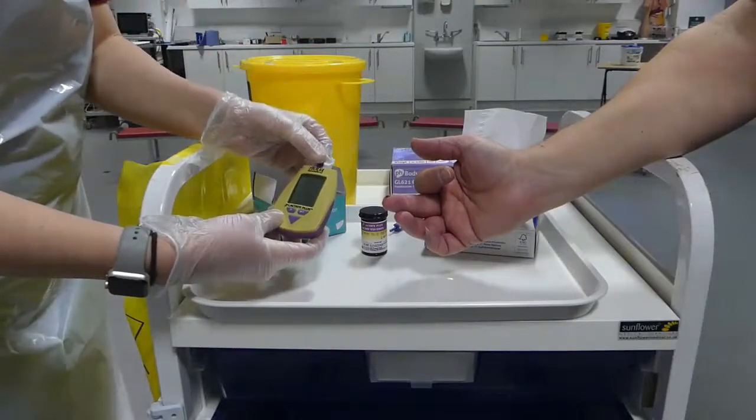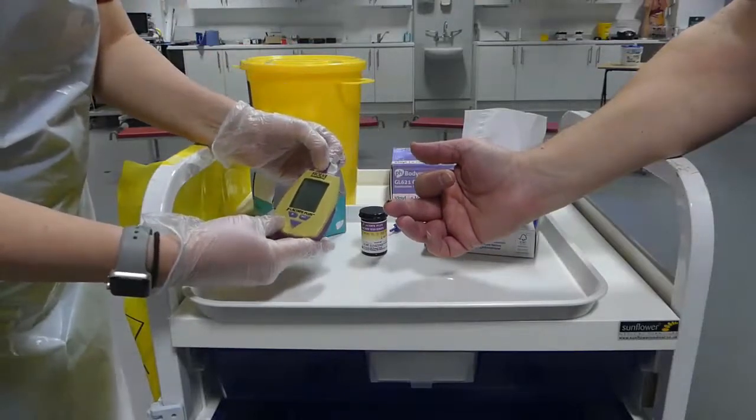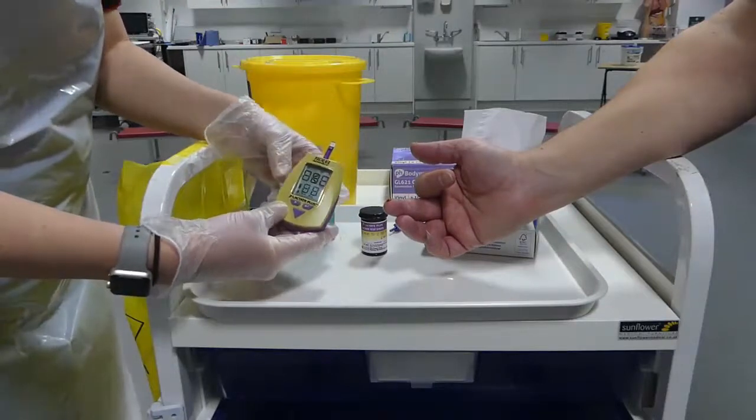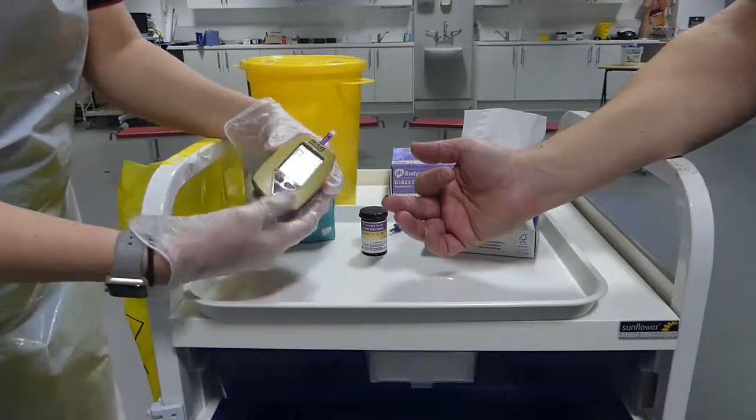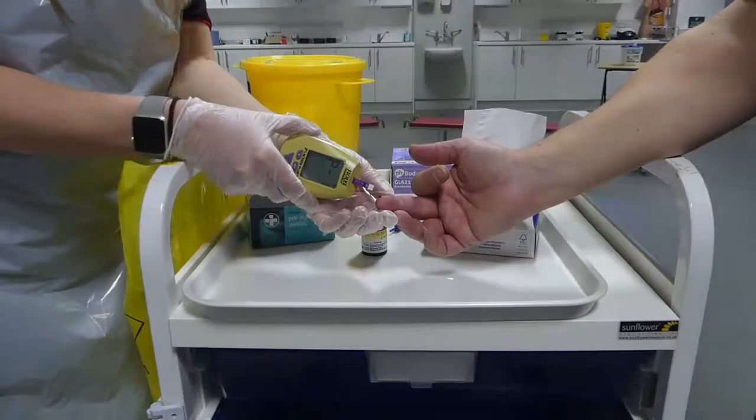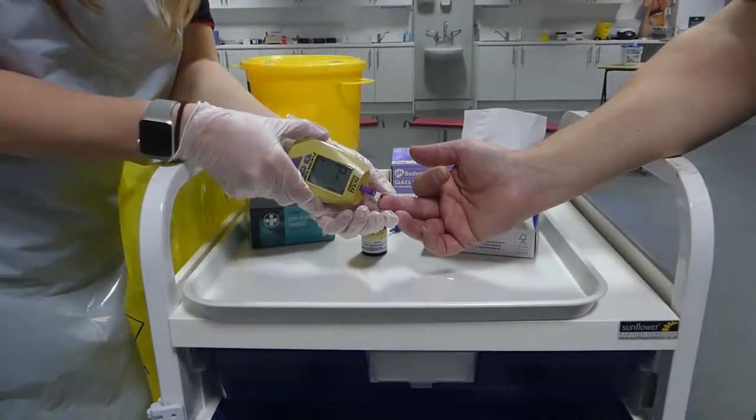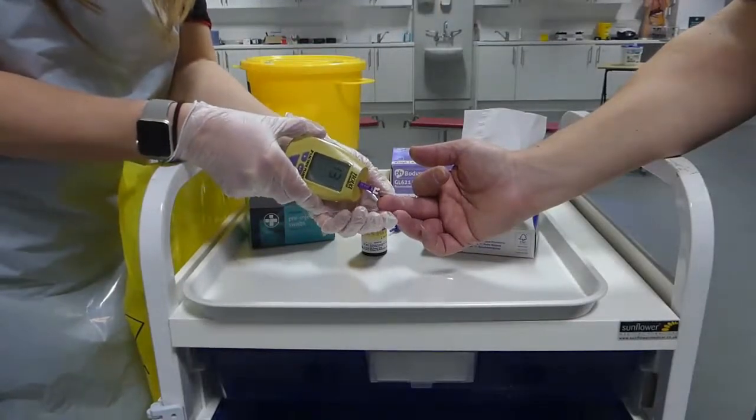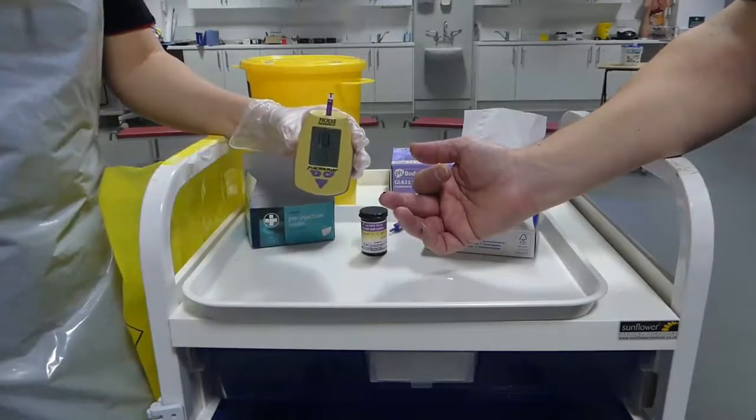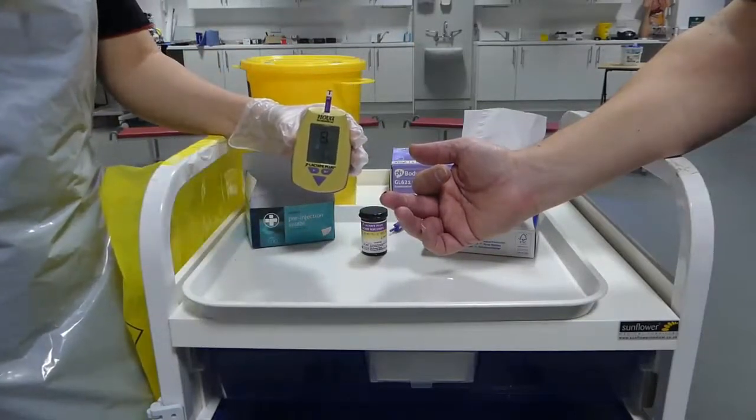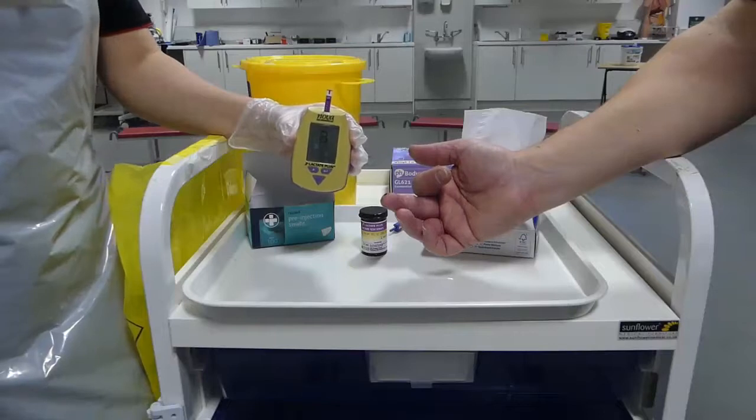Insert the test strip into the analyzer until the device comes on. Once on, place the tip of the test strip to the blob of blood and notice how the blood is drawn up by capillary action. The machine will beep once the correct amount of blood is achieved. The Lactate Plus then takes 13 seconds to provide the result.